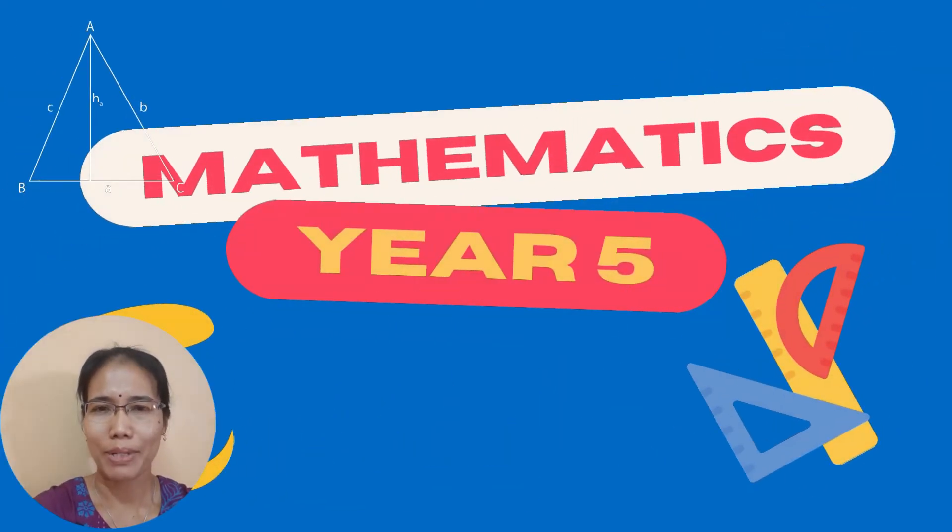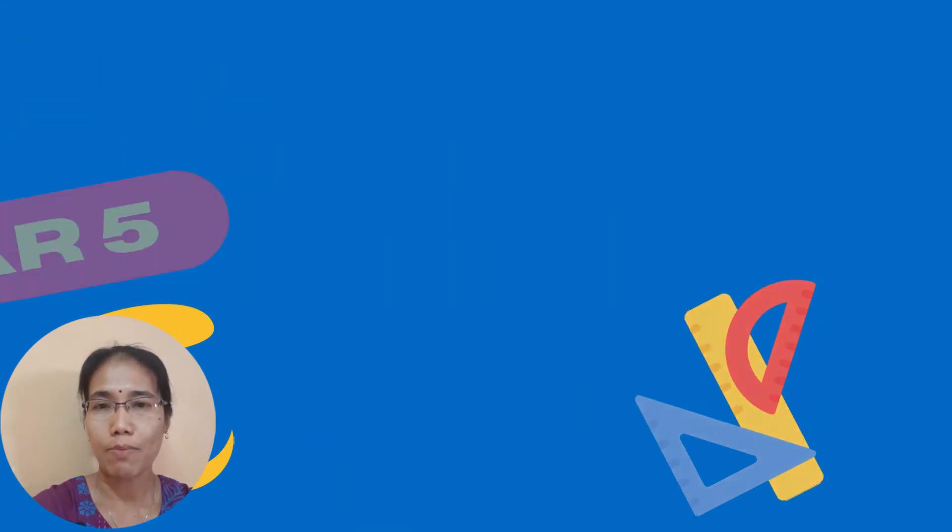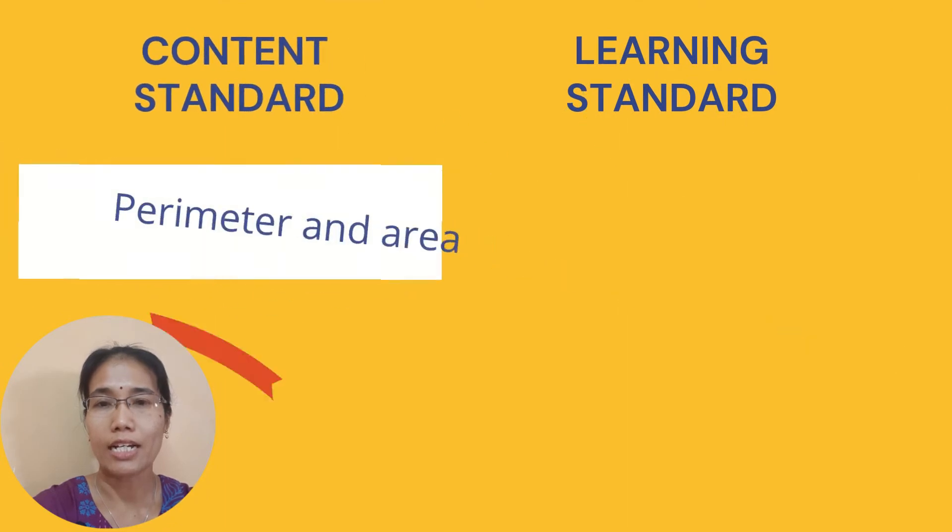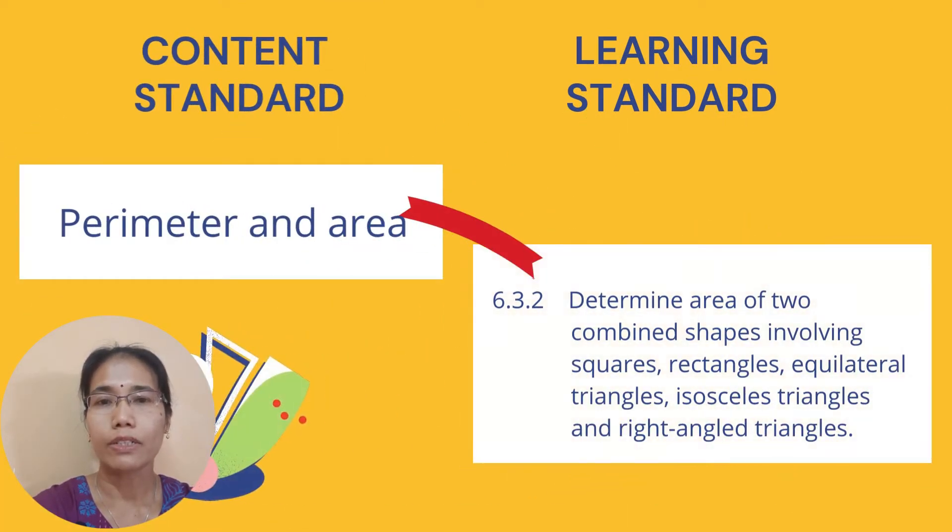Hi everyone, we meet again. Today we will learn how to determine area of two combined shapes involving squares, rectangles, equilateral triangles, isosceles triangles, and right-angled triangles.